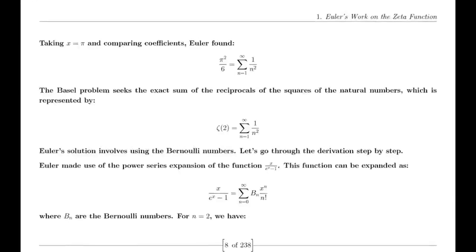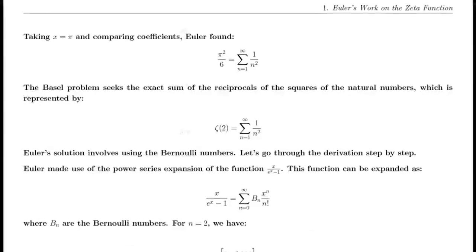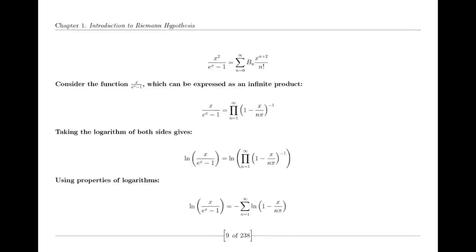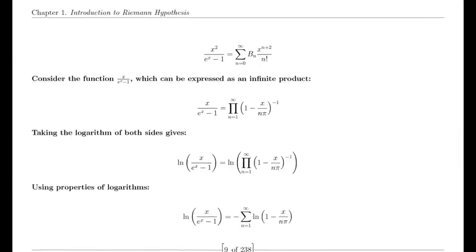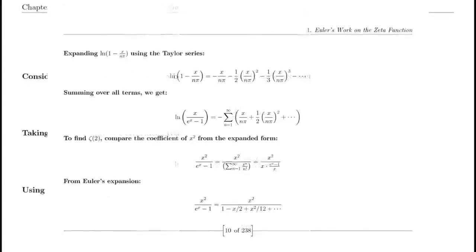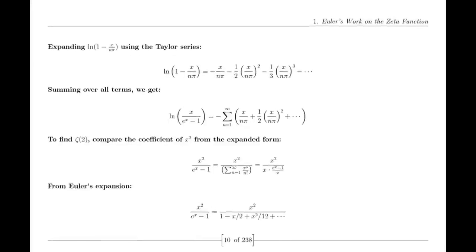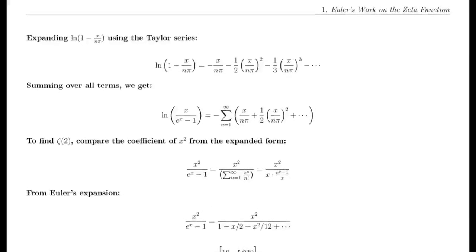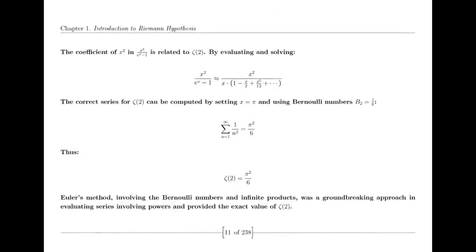Functional Equation of the Zeta Function. The functional equation of the zeta function relates its values at s and 1−s through a complex expression involving π, the gamma function, and trigonometric functions. This equation is a key result in the theory of the zeta function, showcasing its symmetry and the deep relationships between different mathematical concepts.